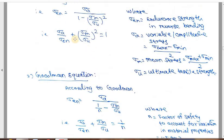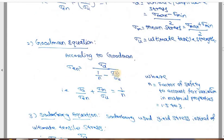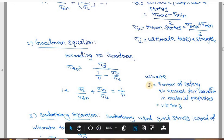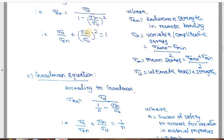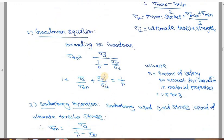Comparing Gerber and Goodman: Goodman replaces the squared term with a linear term and introduces the factor of safety n. In Goodman's equation, instead of (sigma_m / sigma_u)^2 he removes the square, and instead of 1 he writes 1/n, where n is the factor of safety (typically 1.5 to 3 for fatigue loading). Simplified: sigma_a / sigma_en + sigma_m / sigma_u = 1/n. Because of the squared term in Gerber, that curve is a parabola; removing the square term gives a straight line.